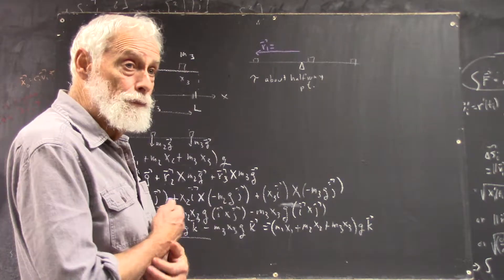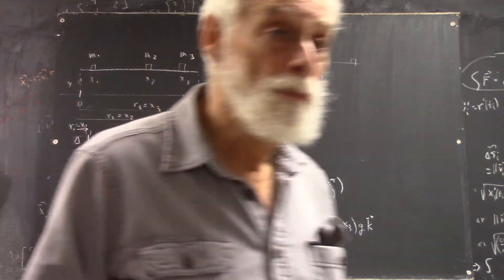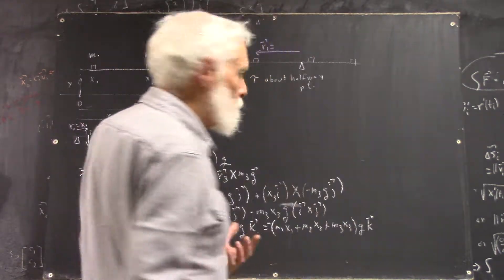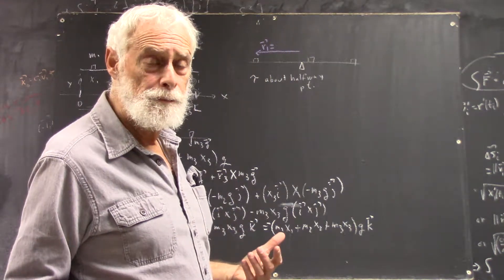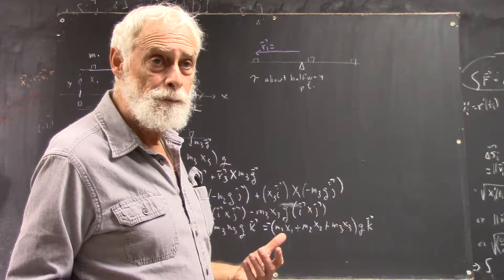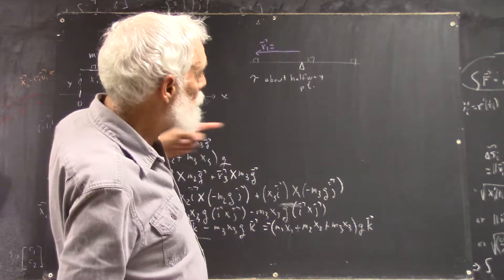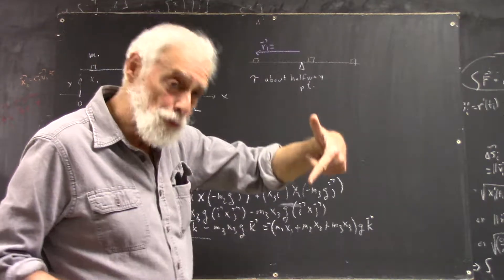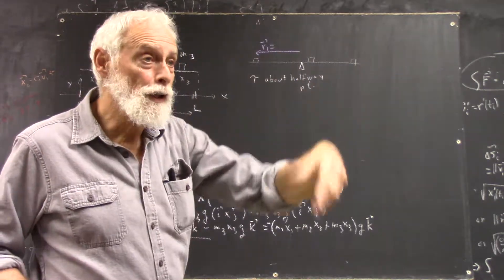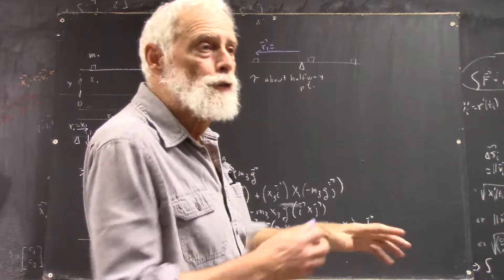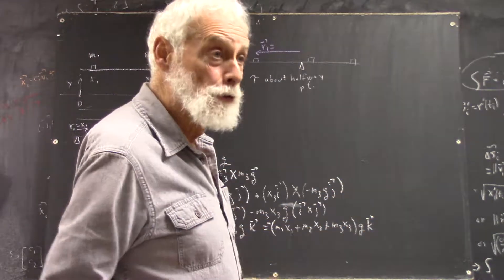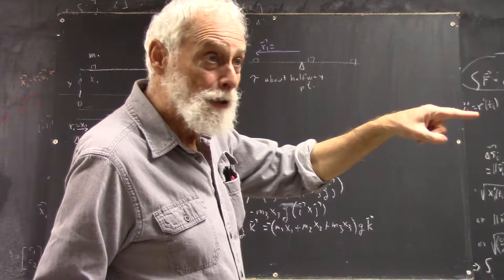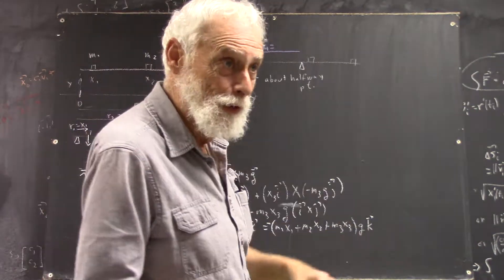Would it be L over 2 minus x1? Again? L over 2 minus x1. Is that going to be positive or negative? Oh, okay. X axis goes this way. Okay, so it would be x1 minus L over 2. It was a good answer, and you saw how to modify it, right? Yeah. Because if you check it out against what your picture's going to be, you'll find that if you did it the other way, it would still be going to the right, even though you don't have the absolute value anymore.